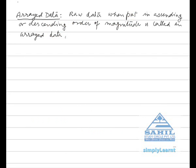Arrayed data: Raw data when put in ascending or descending order of magnitude is called arrayed data. Arrayed means arranged, so arrayed data is arranged in ascending or descending order.